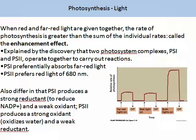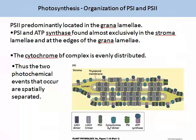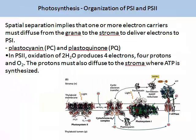Photosystem I produces a strong reductant and a weak oxidant, while photosystem II produces a strong oxidant and a weak reductant. Photosystem II is predominantly located in the grana laminae, while photosystem I and ATP synthase are found almost exclusively in the stroma laminae and at the edges of the grana laminae. The cytochrome BF complex is very distributed. Thus the two photochemical events that occur are spatially separated. Spatial separation implies that one or more electron carriers must diffuse from the grana to the stroma to deliver electrons to photosystem I — two molecules contributing are plastocyanin and plastoquinone. In photosystem II, oxidation of two water molecules produces four electrons, four protons and one oxygen molecule. The protons must also diffuse to the stroma where ATP is synthesised.